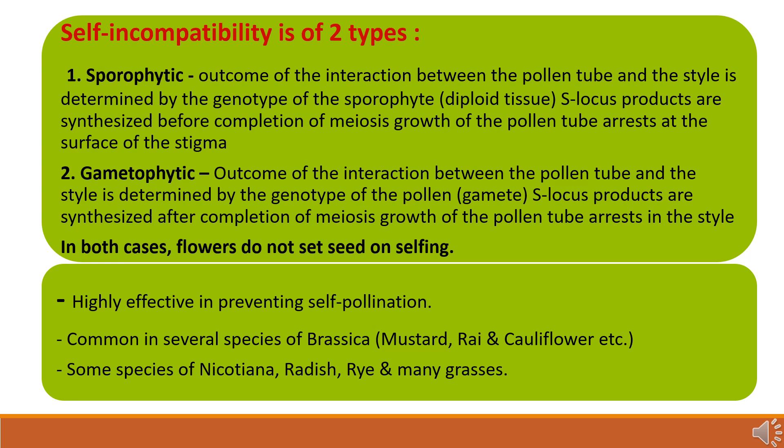Self-incompatibility is of two types: the first is sporophytic and the second is gametophytic. In sporophytic incompatibility, the outcome of interaction between the pollen tube and the pistil is determined by the genotype of the sporophyte, meaning diploid tissues, and the products are synthesized before completion of meiosis. The growth of the pollen tube takes place on the surface of the stigma. In gametophytic self-incompatibility, the outcome is determined by the genotype of the pollen, meaning the gametes, and the products are synthesized after completion of meiosis. The growth of the pollen tube is arrested in the pistil. In both cases, there will be no seed setting on self-pollination.